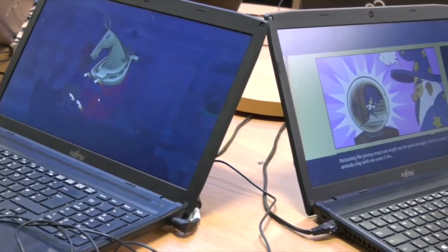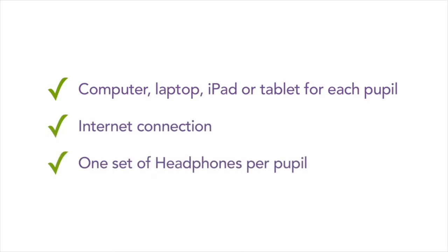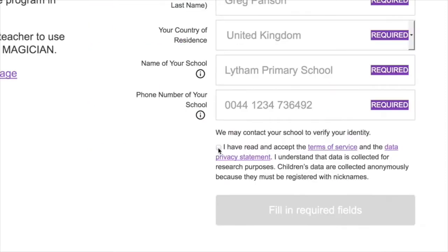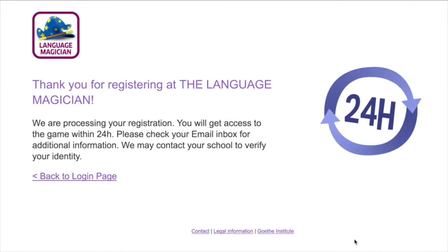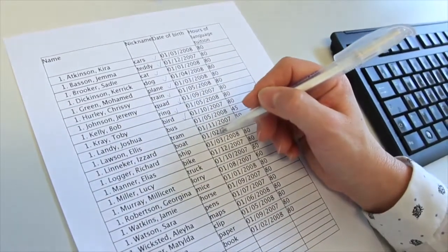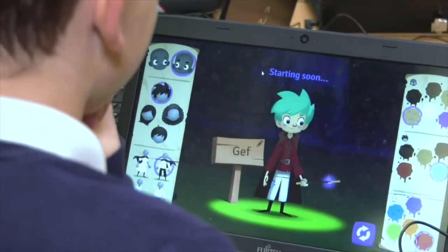What do you need to play the game? A computer, laptop, iPad, or tablet for each pupil, an internet connection, and one set of headphones per pupil. You need an access code — go to our website and fill in the required data. Read the terms and conditions and agree to them. Within 24 hours of submitting your data, an access code will be generated. You also need a data sheet — prepare one with your pupils' names and give each of them a nickname. Nicknames must consist of at least three alphabetical letters.